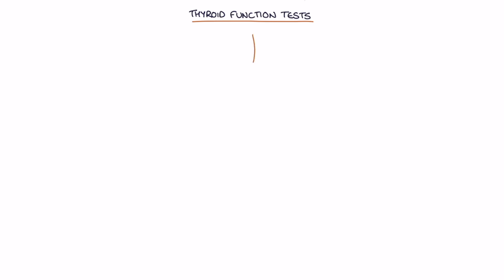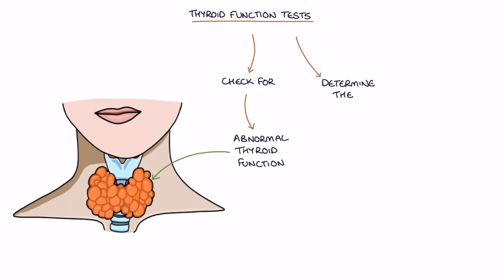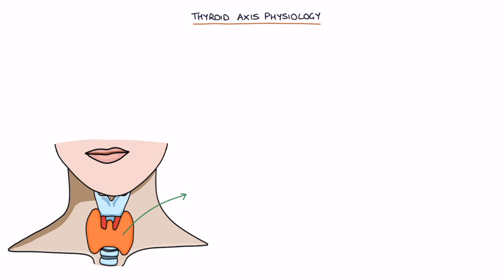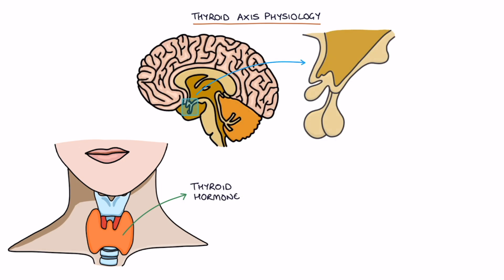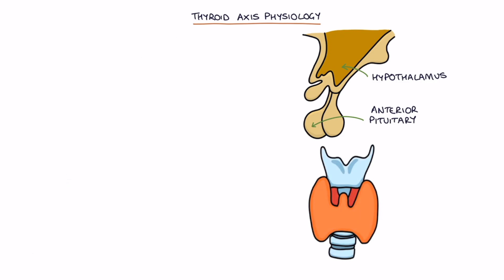Thyroid function tests can be used to check for abnormal thyroid function and determine the cause. Let's start with some basic thyroid axis physiology. Thyroid hormone levels are controlled by two structures in the brain called the hypothalamus and the pituitary gland, specifically the anterior part of the pituitary. The hypothalamus releases thyrotropin releasing hormone, or TRH.